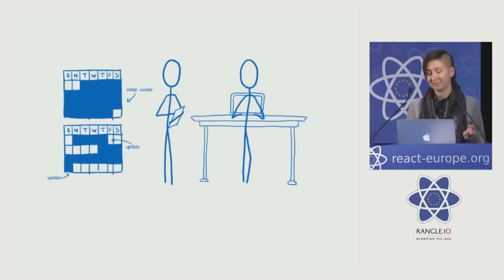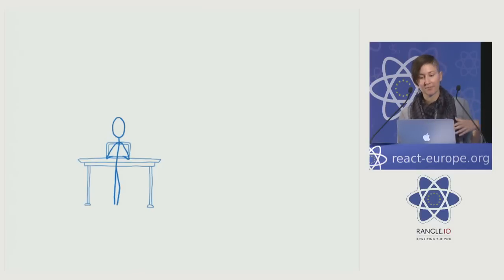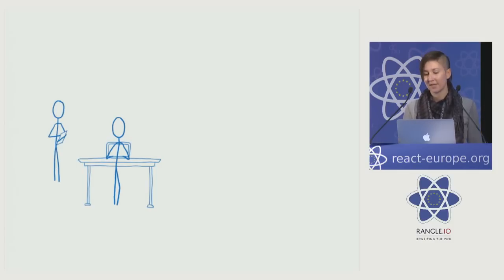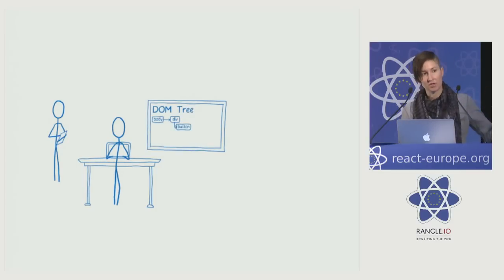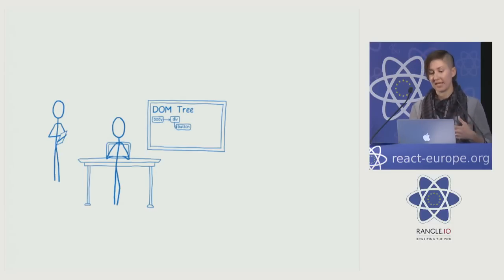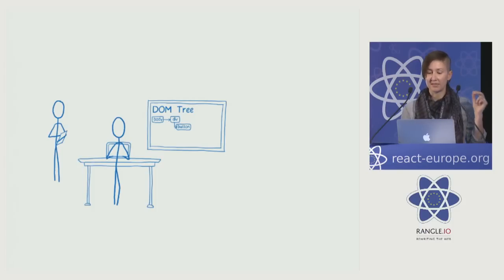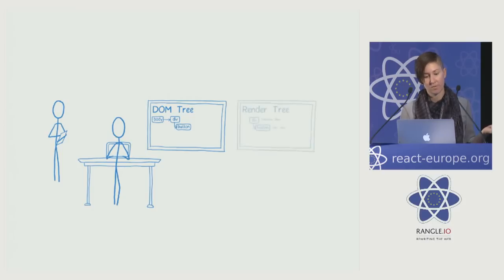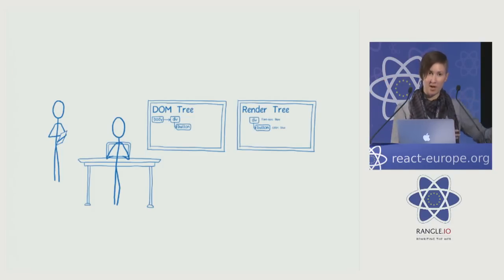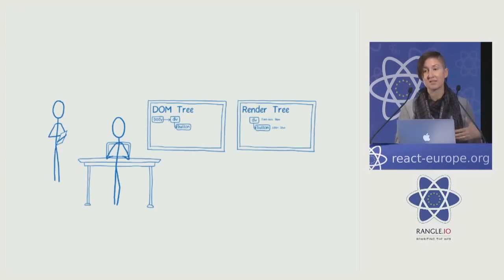Before we know how to reduce the amount of work the main thread is doing, we need to know more about what that work is. The main thread is in charge of JavaScript, the DOM, and layout. JavaScript is where your code lives — where you define and call functions. The DOM is how those functions tell the page what to do, giving you objects to move around and manipulate. Behind the scenes there's something called the render tree. The main thread combines the DOM and CSS to create the render tree, then figures out the box model, and paints the pixels on the screen. This process is called a reflow, and that computation takes a bit of time.